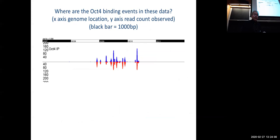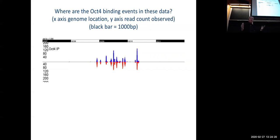Here is some actual ChIP-seq read data. The x-axis is genomic location where the black bars are every thousand bases. You can see the positive and negative strands — reads mapping the positive and negative strands of the genome. The question is: how would you identify where, in this case, OCT4 is binding? We've used an antibody to OCT4 to pull it down, sequenced all the little fragments bound to it, mapped it to the genome, and this is what we get.